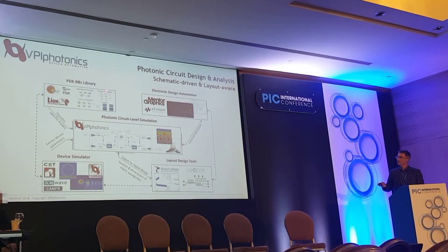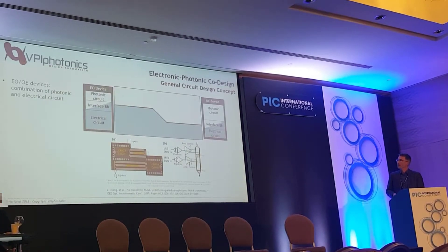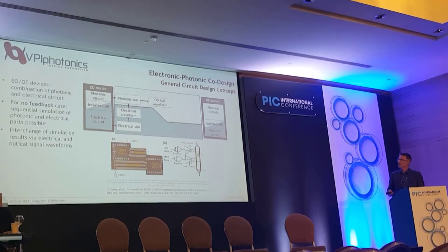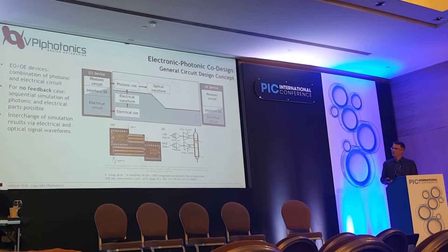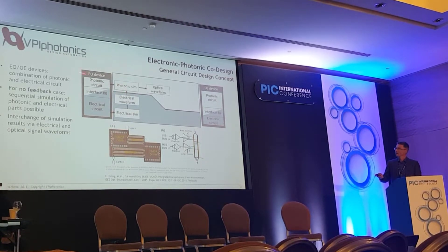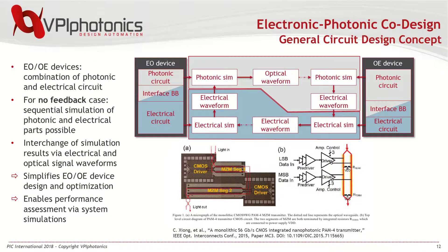Now I want to touch on the optoelectronic application. Generally, any electro-optic or optoelectronic device can be seen as a combination of a photonic and electrical circuit, with interface building blocks — in this case a modulator and a photodiode — integrating the electrical and photonic circuits with each other. Assuming there is no direct feedback between those domains, you can perform sequential simulations of the photonic and electronic parts. This drastically speeds up simulation and design capabilities, with exchange done via electrical and optical waveforms.